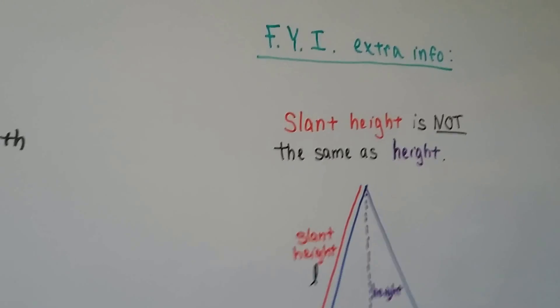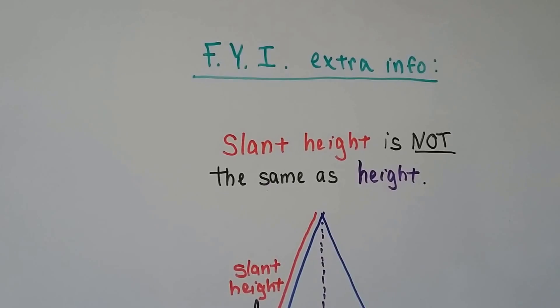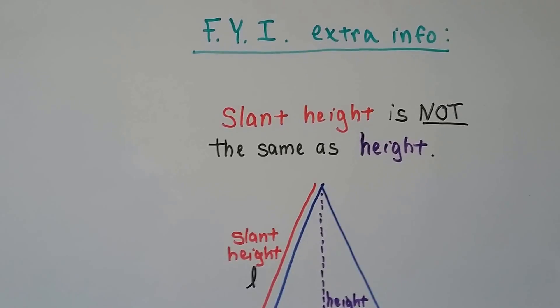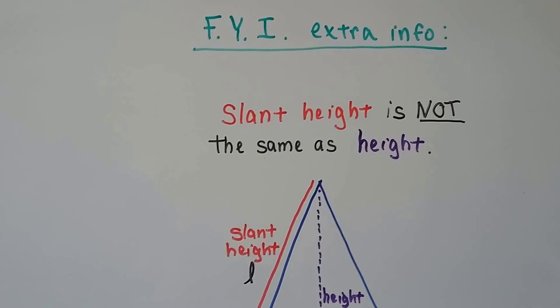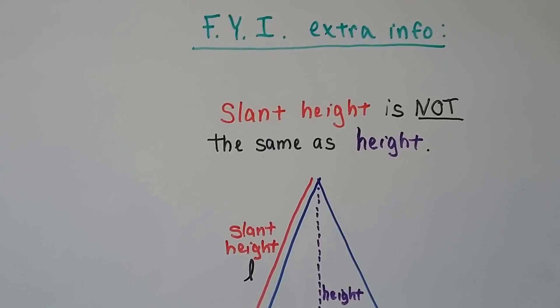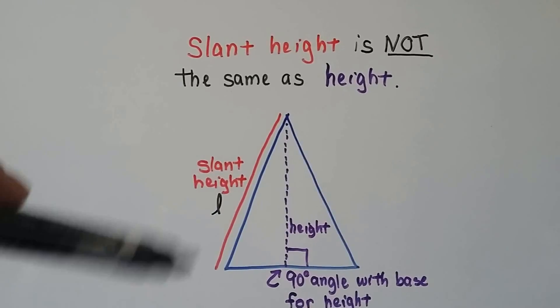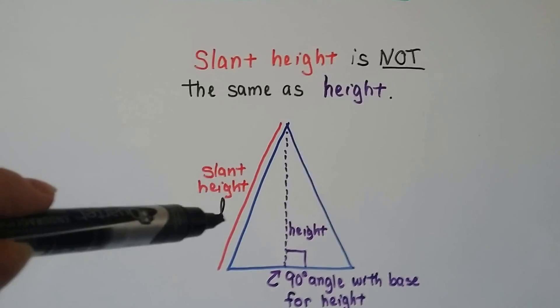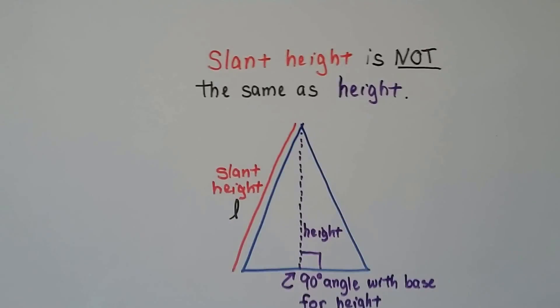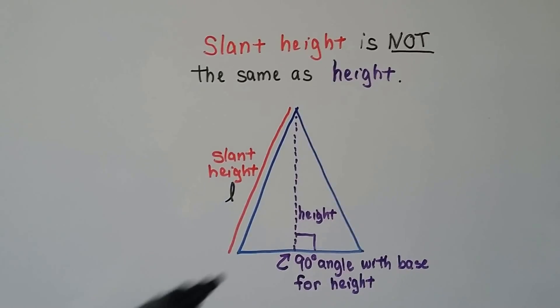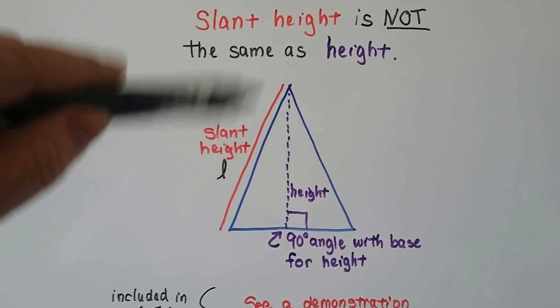Now, this is FYI, for your information. It's extra info that's not in the Steck-Vaughn GED book, but I thought I'd mention it to you because people who do take algebra and geometry in high school, the actual courses, would probably learn this. So this is like high school geometry. There's a thing called slant height. And you'll see like a little script L, lowercase l. It means that length. It's not the same as height. Here we have our height with our 90 degree angle box, but that's the slant height.